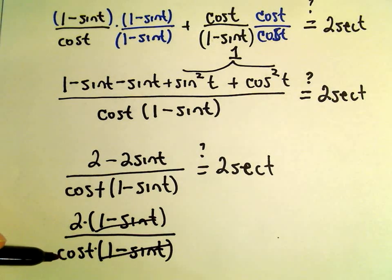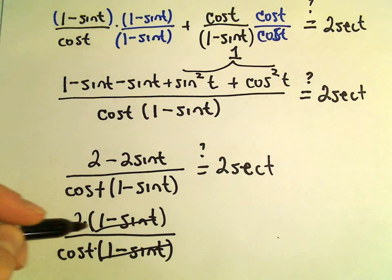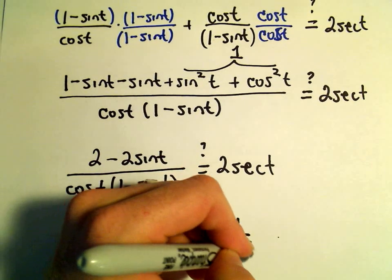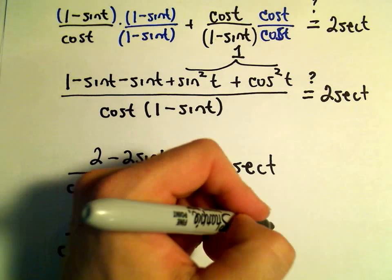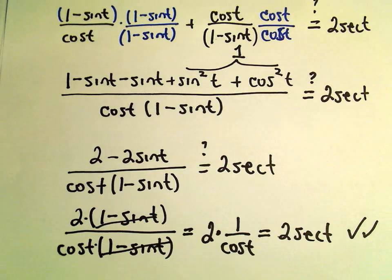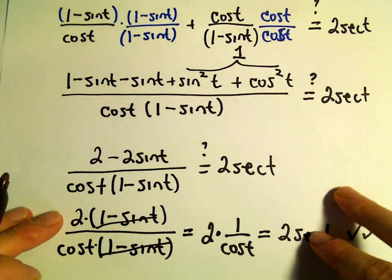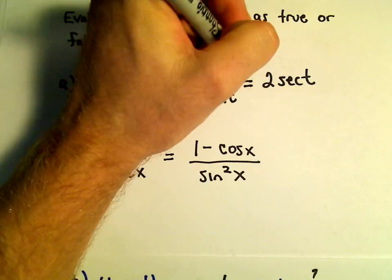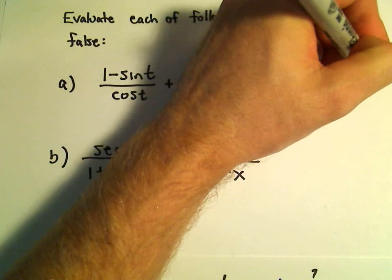We're left with 2 over cosine t. You can think about this as 2 times 1 over cosine t. And 1 over cosine is secant. So this is in fact an identity. It is correct to say that the original expression equals 2 secant t. This I would say is true.